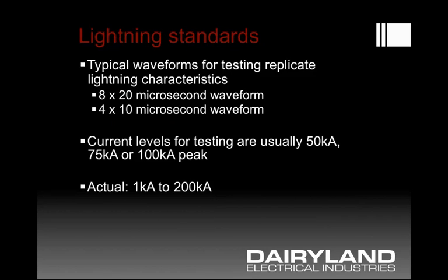There are typical waveforms used for testing products that protect against lightning. The 8 by 20 microsecond waveform, or 4 by 10 microsecond, is just a measure of the wave shape and how fast the rise time is. The current levels that these waveforms reach — that peak value — is typically between 50 and 100 kA as a peak value. In the real world, the values could vary widely from perhaps thousands of amps to hundreds of thousands of amps.